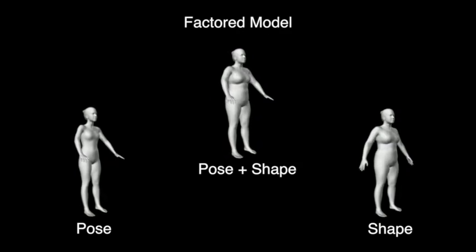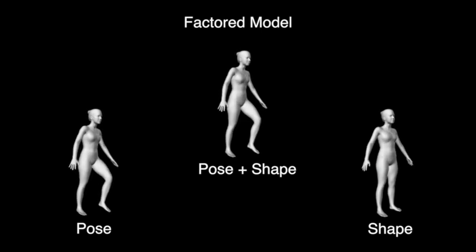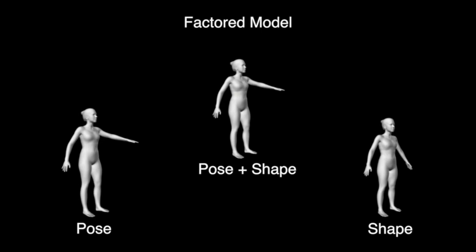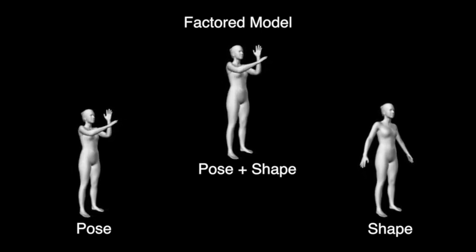To enable this, we use a parametric model of the human body that factors body shape into two causes, one due to identity and the other due to pose. This means that the intrinsic shape of a person remains constant even when their pose varies.